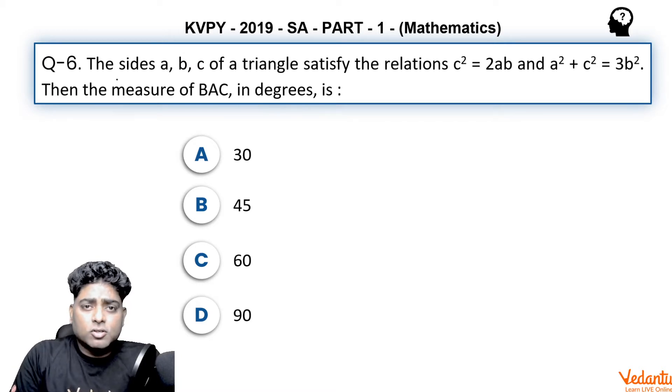It is related to the topic solution of triangle, question number 6. It says the sides a, b, c of a triangle satisfy the relation c² equals 2ab and a² plus c² equals 3b². Two relations are given and the measure of angle BAC in degrees.